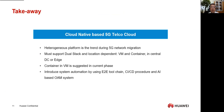Simple takeaways from my session: We need to support a heterogeneous platform — it is the trend during 5G network migration. The most important thing is to support a dual stack and location-dependent mode supporting both virtual machine and container, both in central DC and edge DC. At the current phase, container in VM mode is more suitable and more recommended. System automation is very important — it's still a long way to go. Thank you all for your attention.